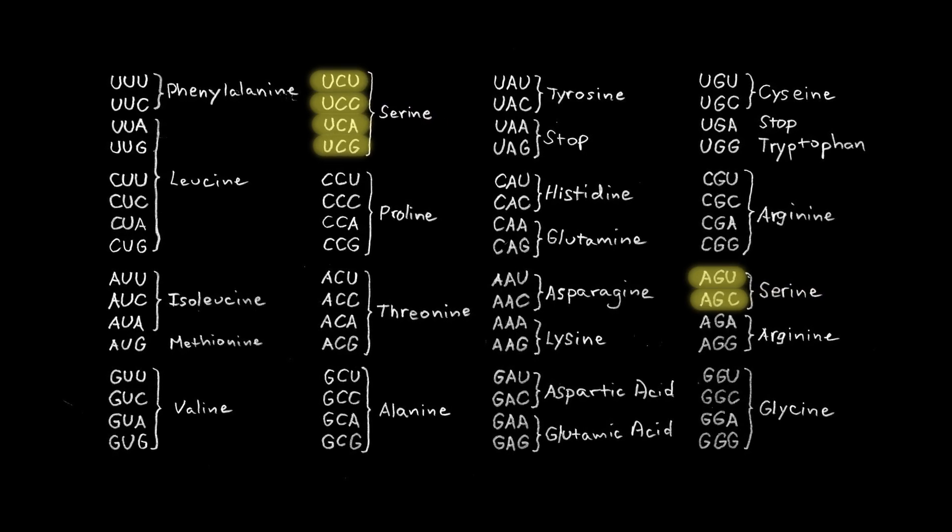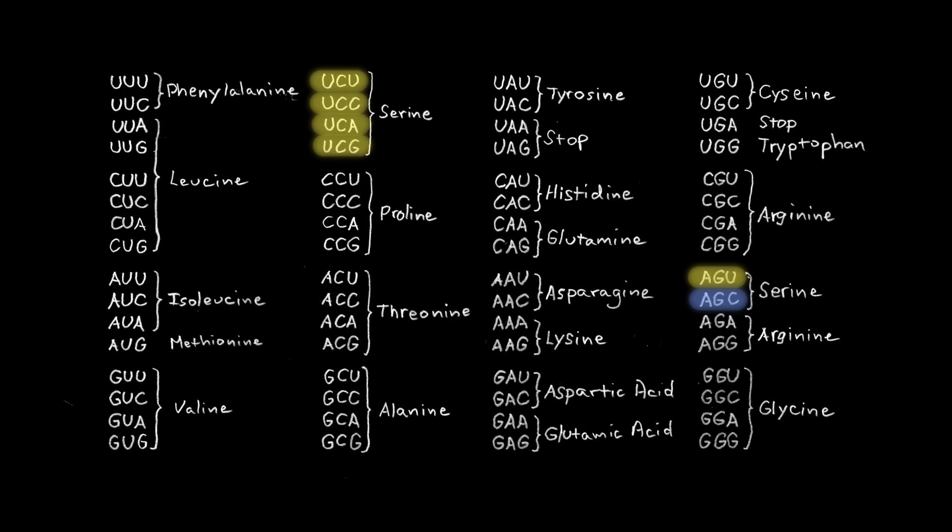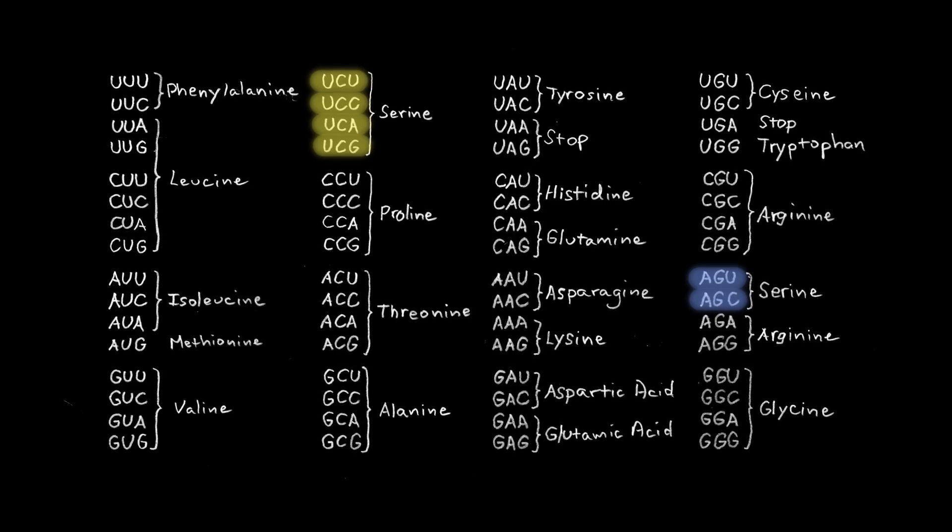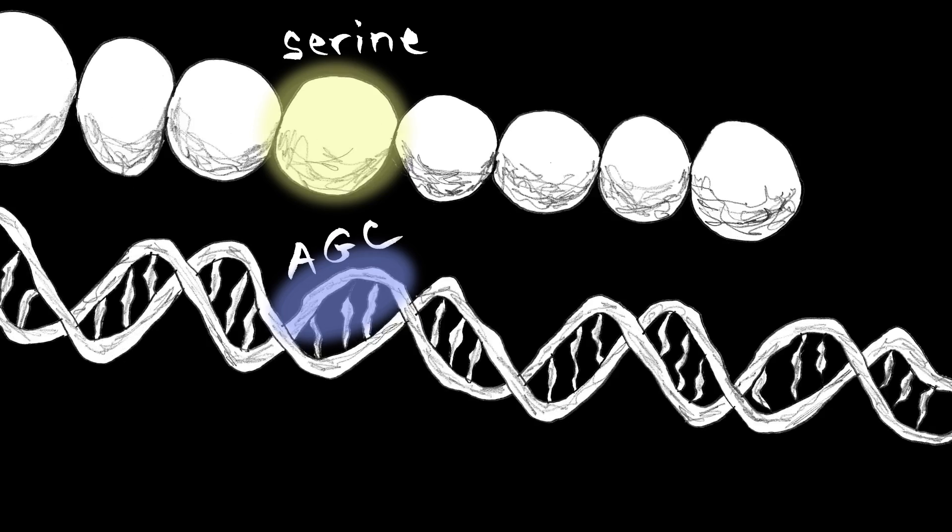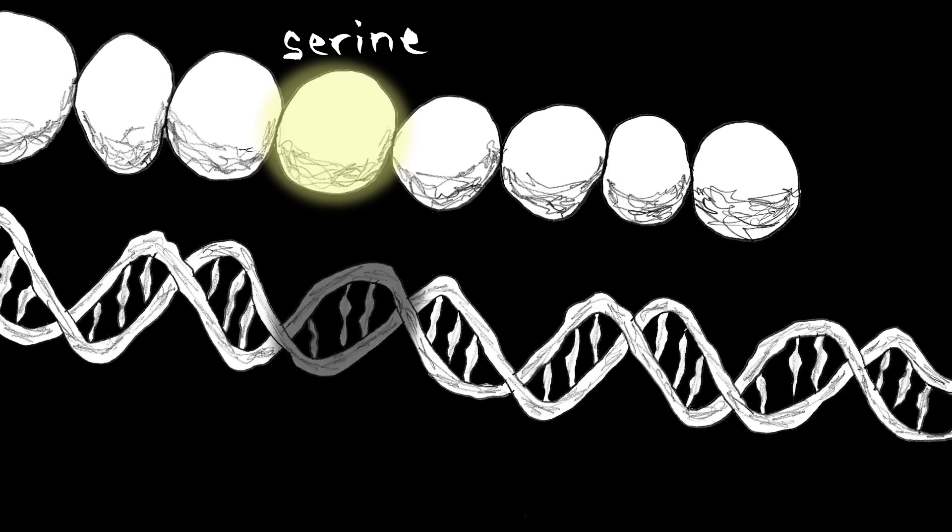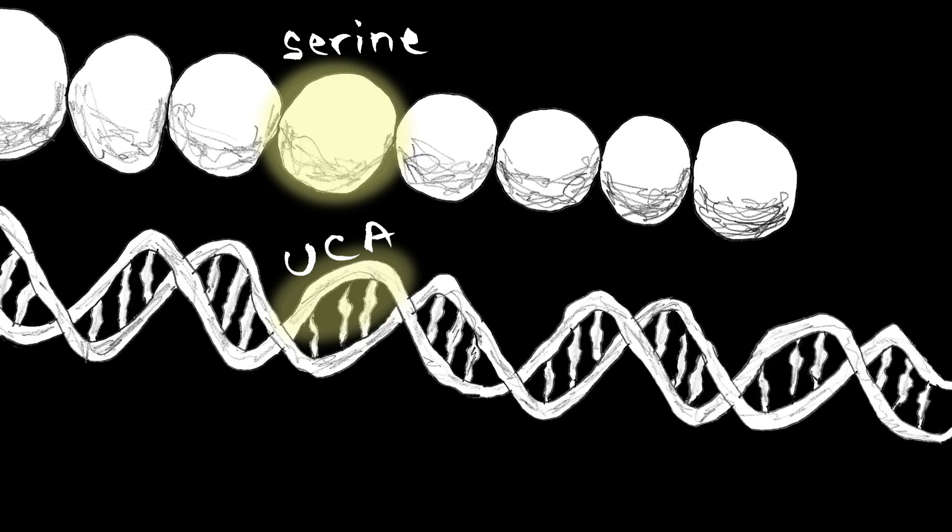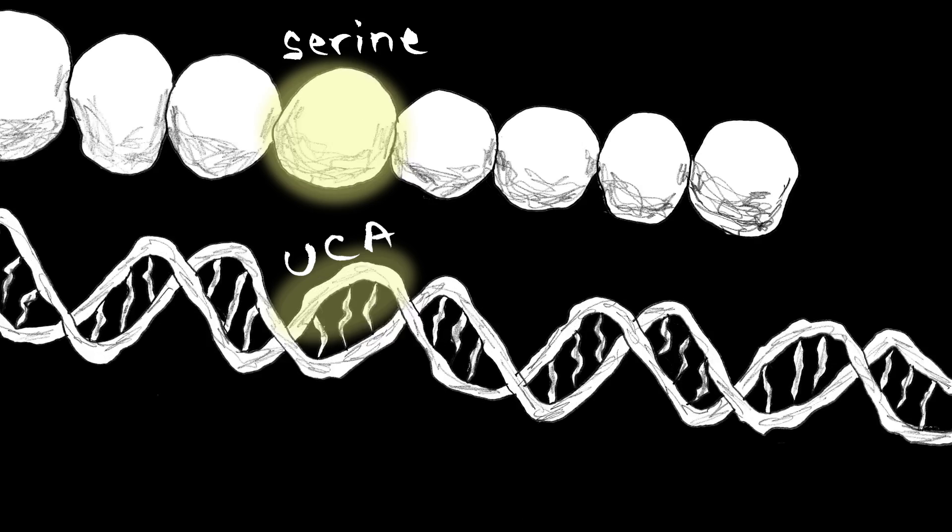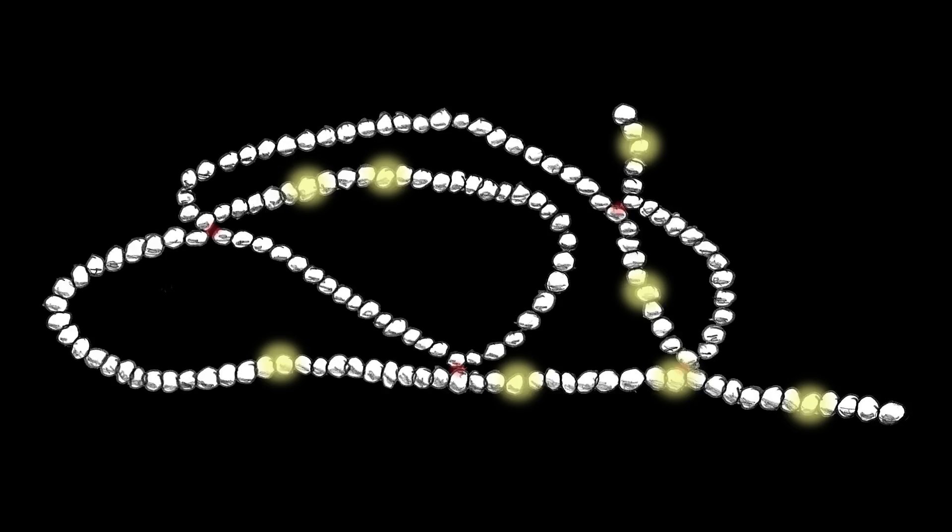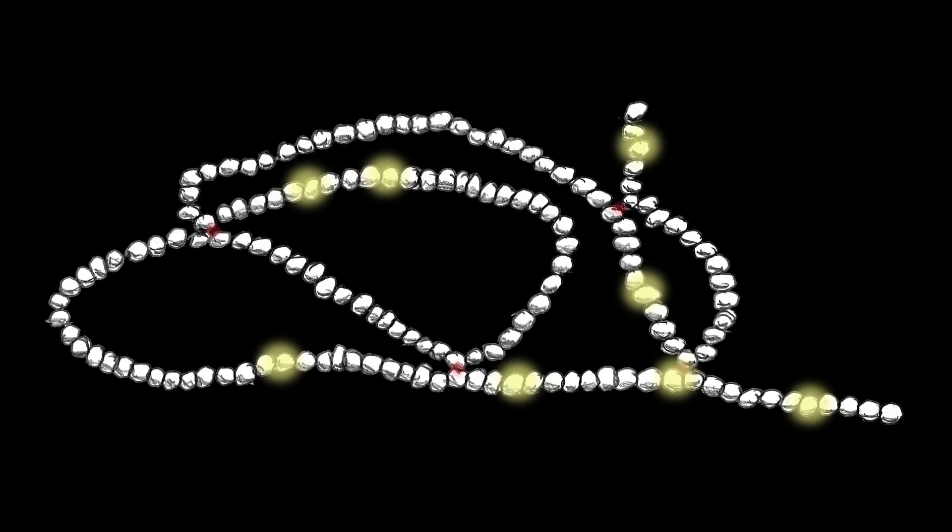So what we did was replace every AGC and AGU codon with one of the other four serine codons. This eliminated the two codons throughout the genome, but it didn't change the proteins in any way. If serine was called for in the sequence before our change, it was still called for after our change.